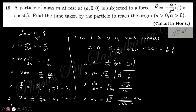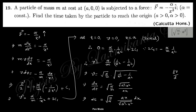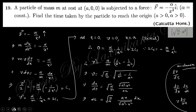Let's start today's discussion. Question 19 says: a particle of mass m at rest at position (a, 0, 0) is subjected to a force — find the time taken by the particle to reach the origin. Force equals mass times acceleration, which can be written as v(dv/dx). So acceleration equals v(dv/dx), and therefore v dv equals minus (alpha/m)(dx/x²).